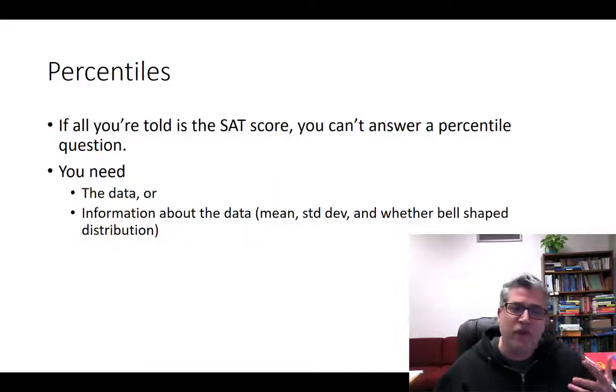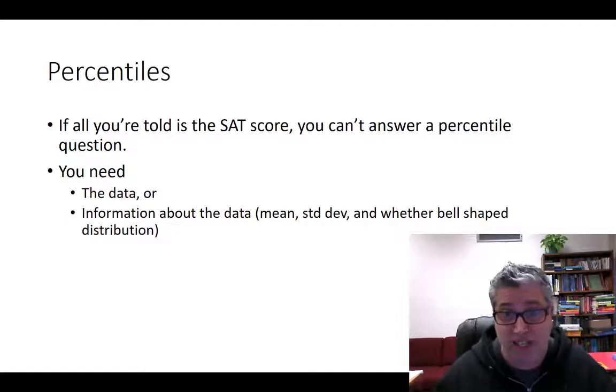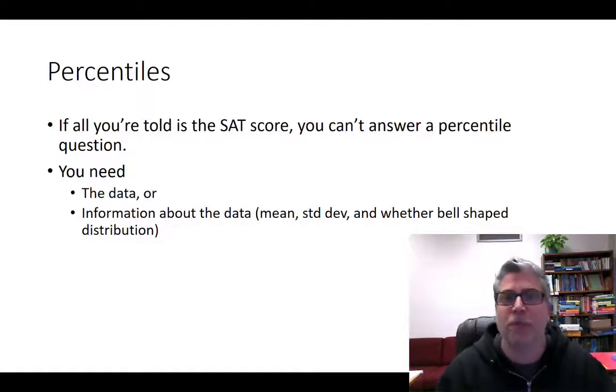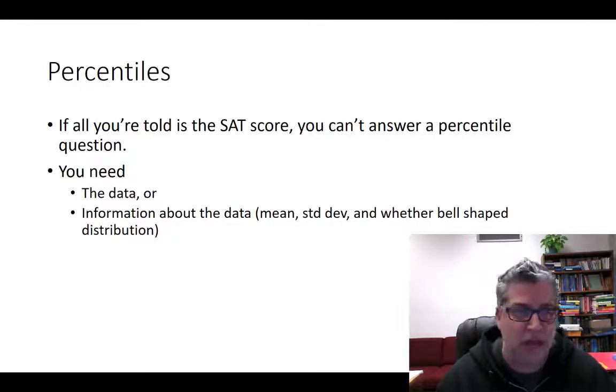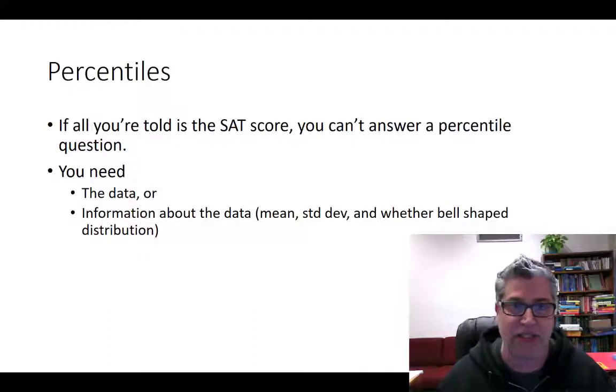Now, if you're not told your percentile and if all you're told is your SAT score, you know, without those tables, you don't know what percentile you're at. You need more information. You need some context. So, if all I told you was you got a 1200 and there's no conversion table there, what do you do?